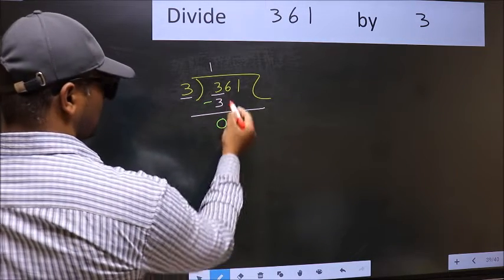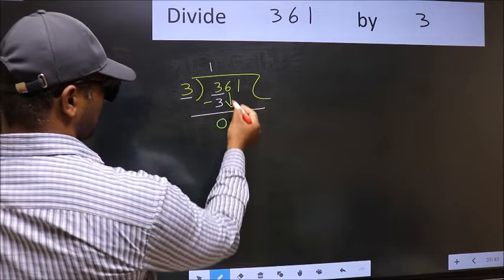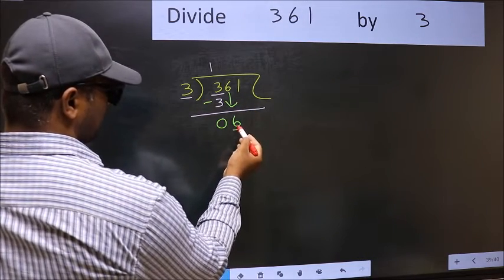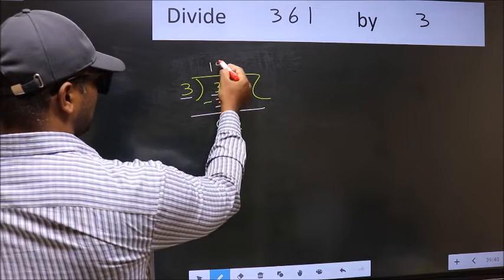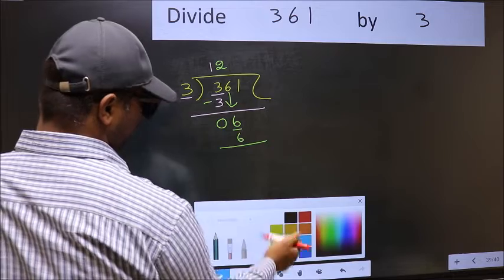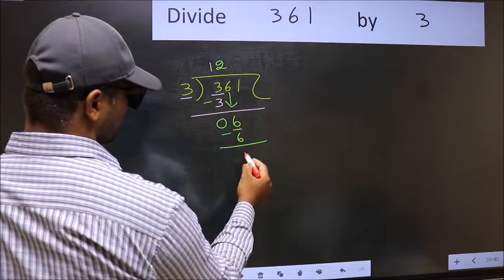After this, you should bring down the beside number. So, 6 down. Now, 6. When do we get 6 in 3 table? 3 2's, 6. Now you should subtract. 6 minus 6, 0.